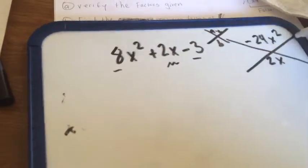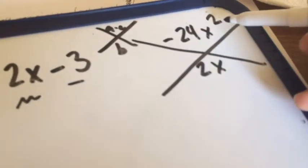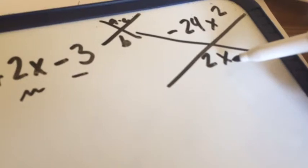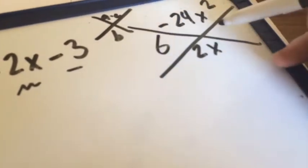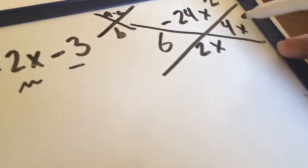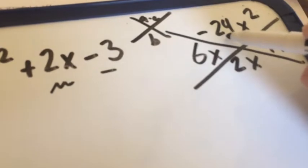We have to think of two numbers that multiply to negative 24x squared, but add up to 2x. And those would be 6x and 4x. But, this is negative, so this is positive.